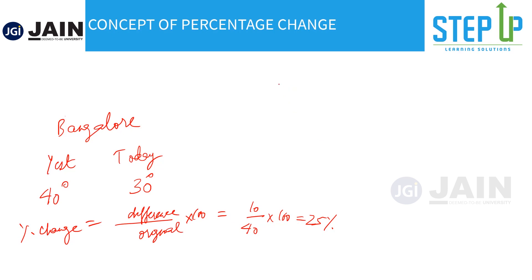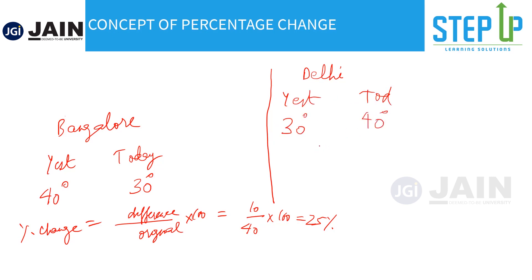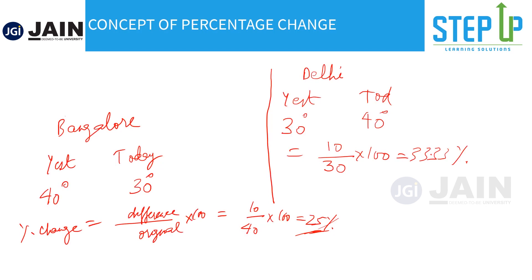One important thing to note is the base. If we take Delhi where the temperature increased from 30 degrees to 40 degrees, the degree change is the same 10 degrees — there it was decreasing, here it's increasing — but the formula gives 10 upon 30 into 100, which is 33.33%, not 25%. The degree change is the same, but because the base was different, the percentage change comes out differently. Very simple but important.